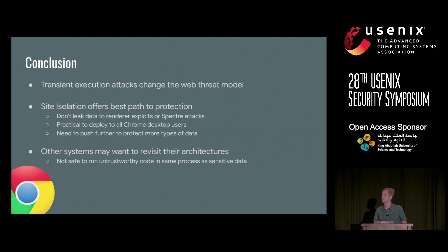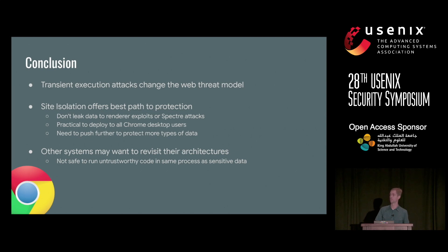Q: How is the cross-origin data check actually performed — inside the renderer process or outside? A: That needs to be done in the privileged process outside of the sandbox. We have a network service process that watches responses coming in and looks at things like the content type and what's in the response before allowing it into the renderer process.